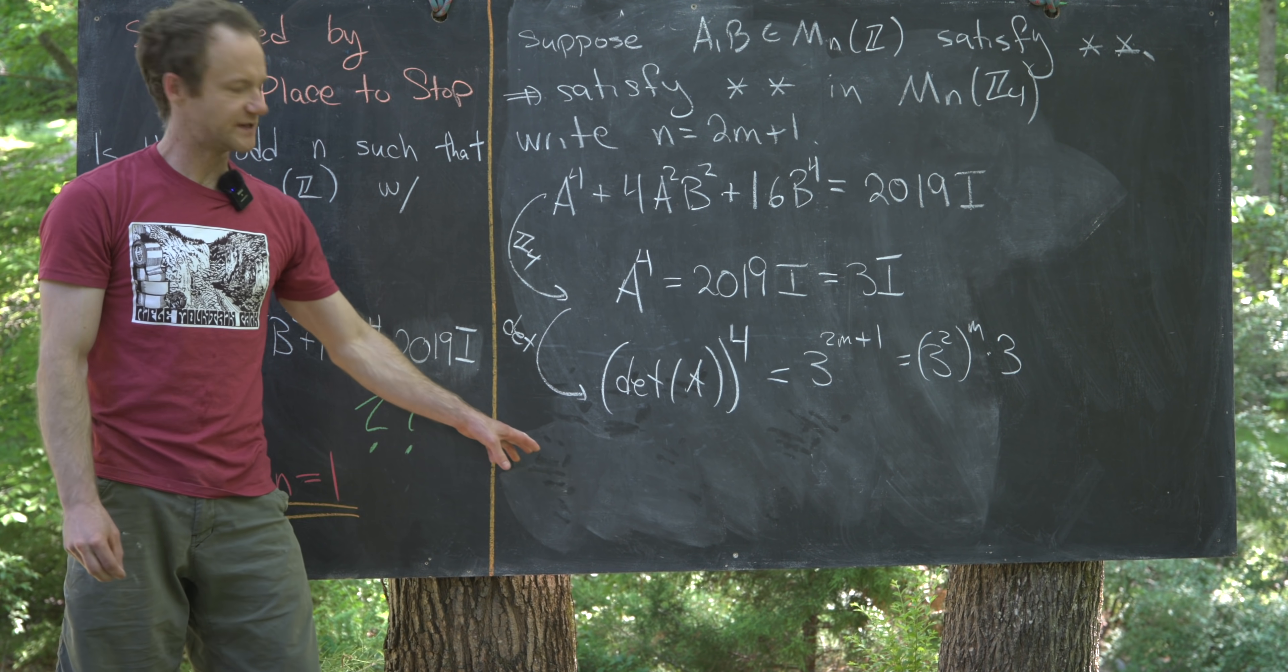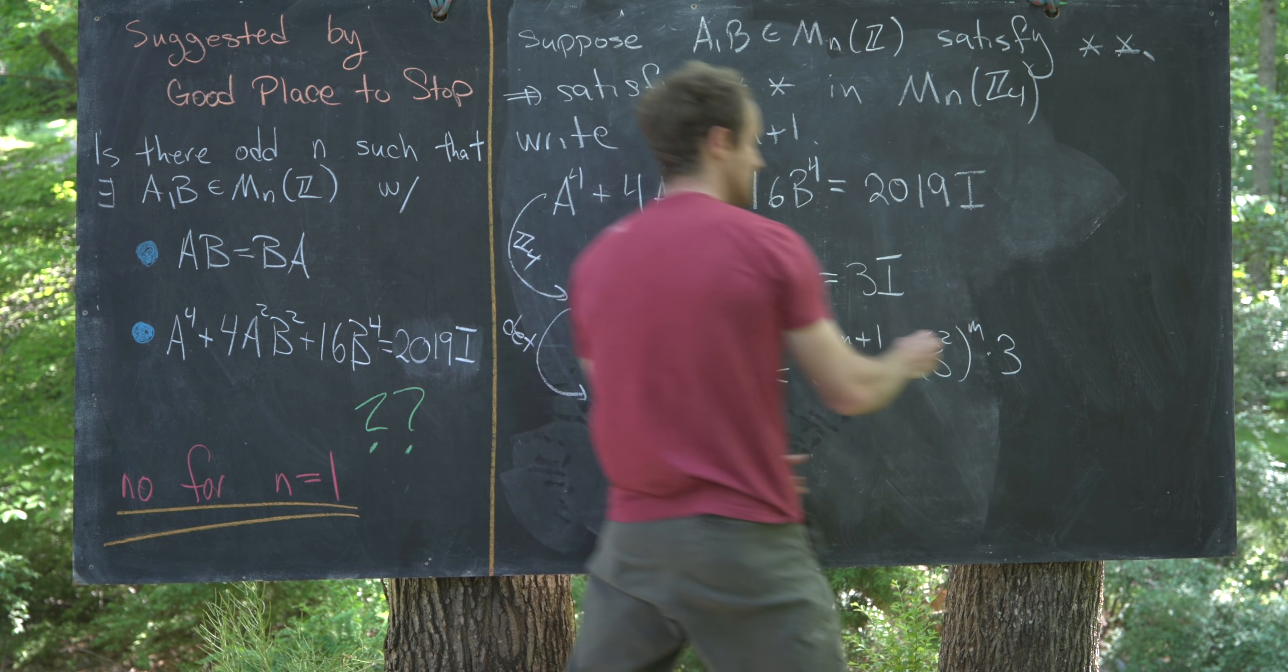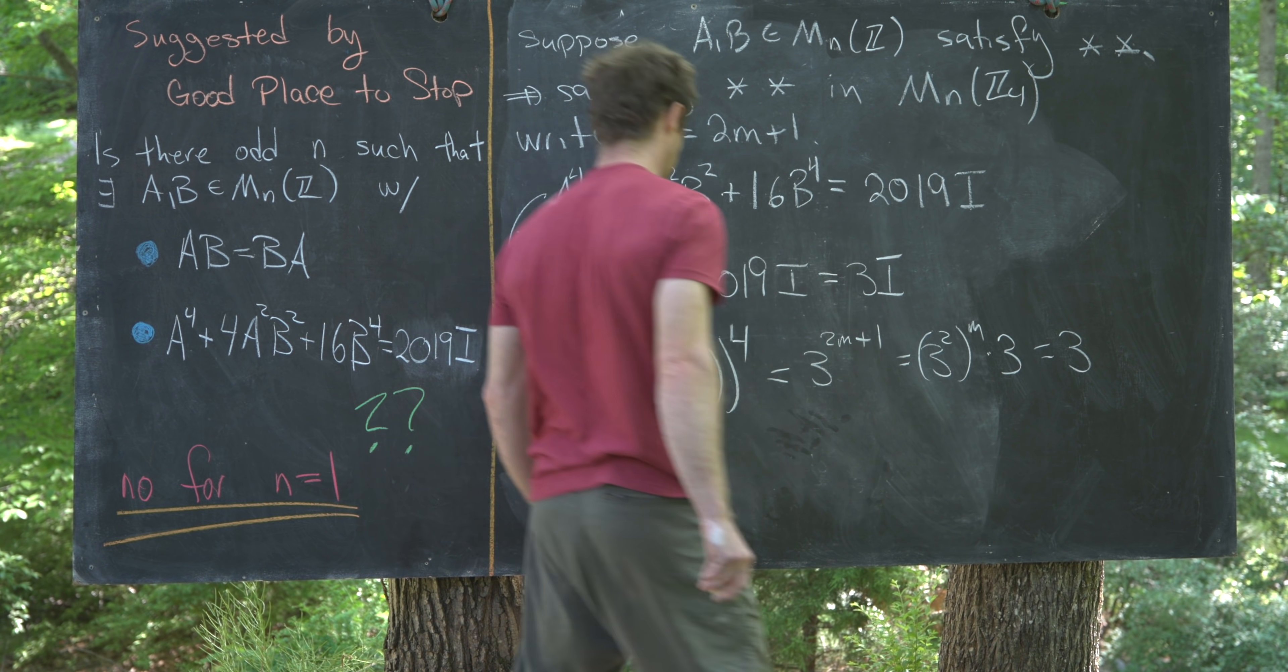But now, that's equal to 3 squared to the m times 3, but 3 squared, like we saw before, is equal to 9, but that's equal to 1 inside of Z4, so this is just equal to 3.